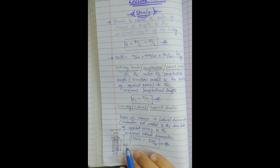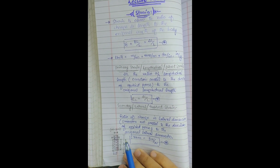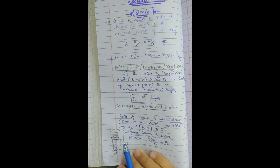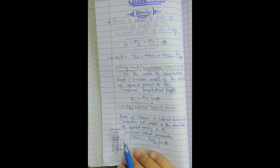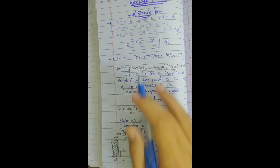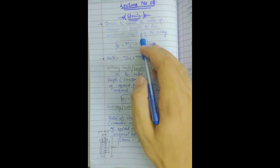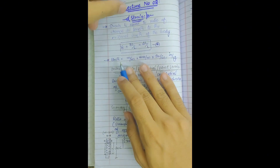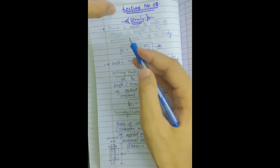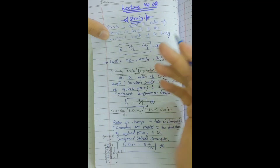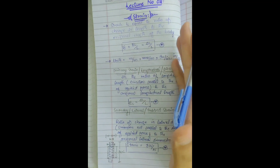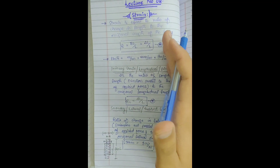Assalamualaikum. Bismillahirrahmanirrahim. Today our topic is all about strain. In the previous lectures we studied about stress and different types of stresses. Now we have to present what is strain and then we will discuss their problems. Strain is equal to the ratio of change in length to the original length of the body. Strain is the change in length per unit original length, and the change may be compression or tension.